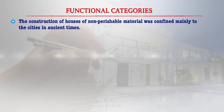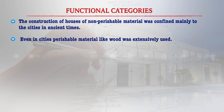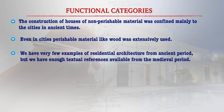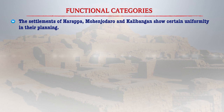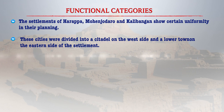Let us first focus on the residential category of architecture. The construction of houses of non-perishable material was confined mainly to the cities in ancient times. Even in cities, perishable material like mud was extensively used. We have few examples of residential architecture from the ancient period, but we have enough textual references available from the medieval period. Apart from the caves used by hunters and gatherers, the first information about residential architecture in India came from the Harappan civilization. The settlements of Harappa, Mohenjo-daro and Kalibangan show certain uniformity in their planning. These cities were divided into a citadel on the west side and a lower town on the eastern side.